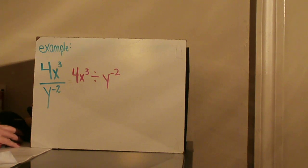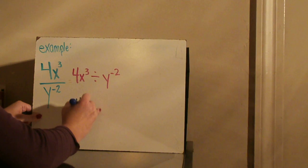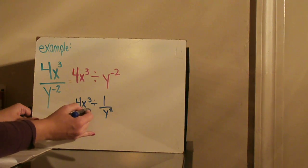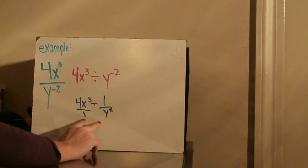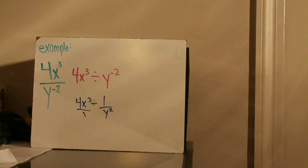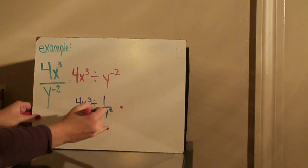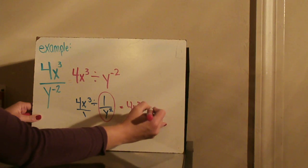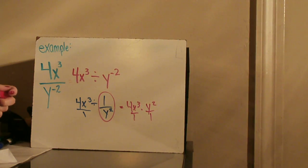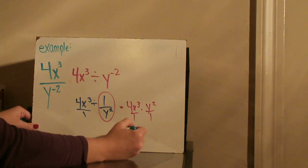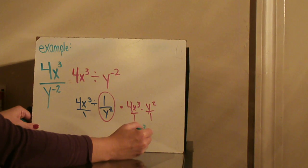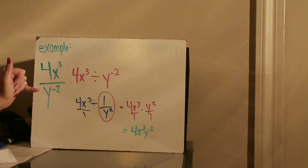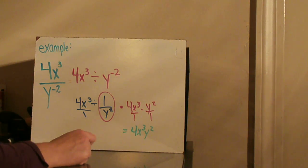I can see that I'm working with 4x to the third divided by 1 over y squared. Remember, this 4x cubed is over 1. So now I have two fractions and I'm going to use my rules for dividing fractions — multiply and flip. So I flip the second fraction: 4x cubed times y squared over 1, which gives 4x cubed y squared. So 4x cubed divided by y to the negative 2 simplified is 4x cubed times y squared.